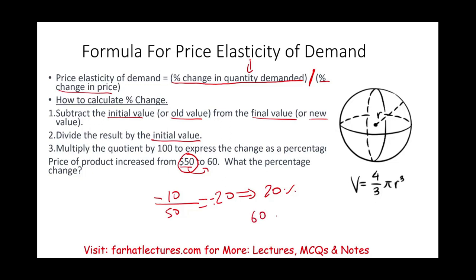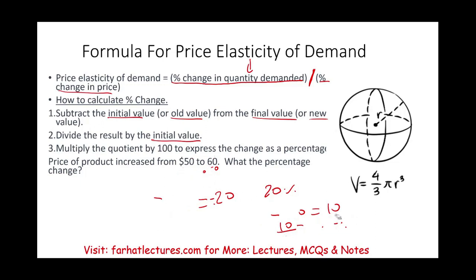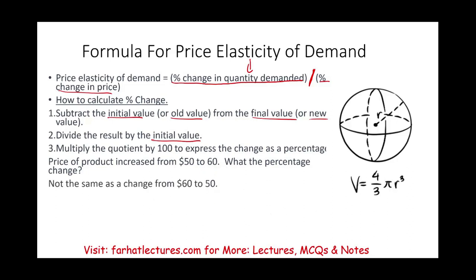Note this is not the same as going from $60 to $50. If the price drops from $60 to $50, the difference is $10, divided by the initial value of $60, giving 16.67%. So when the price goes from $50 to $60, it's not the same percentage as dropping from $60 to $50. For quantity, you take the difference and divide by the initial value to find the percentage change.